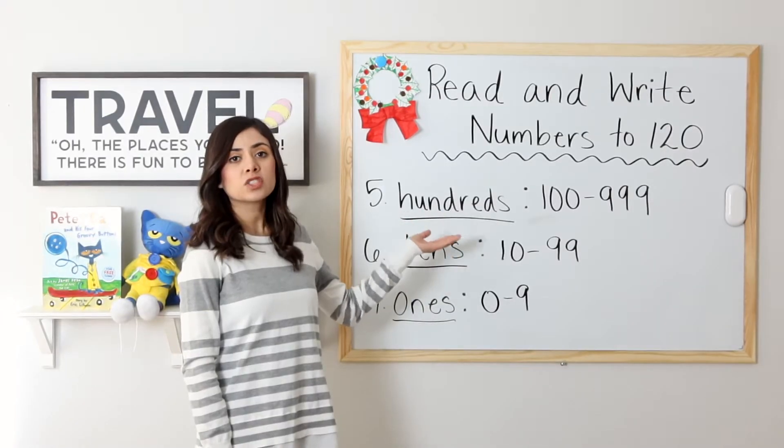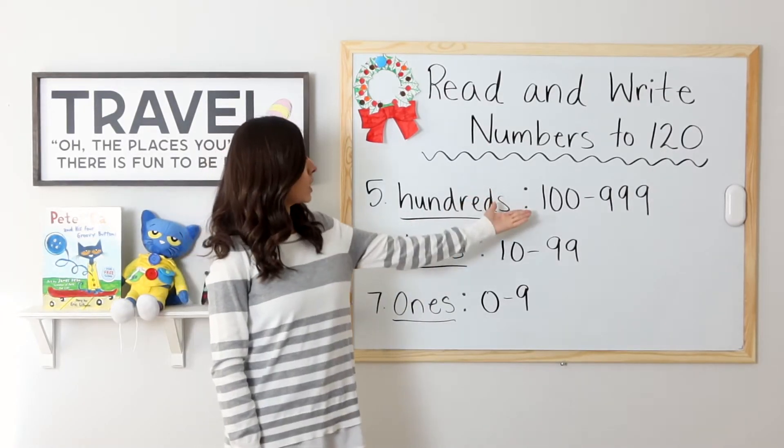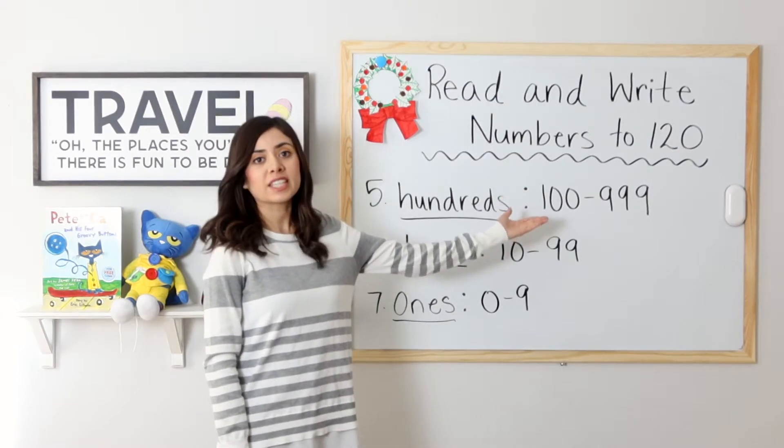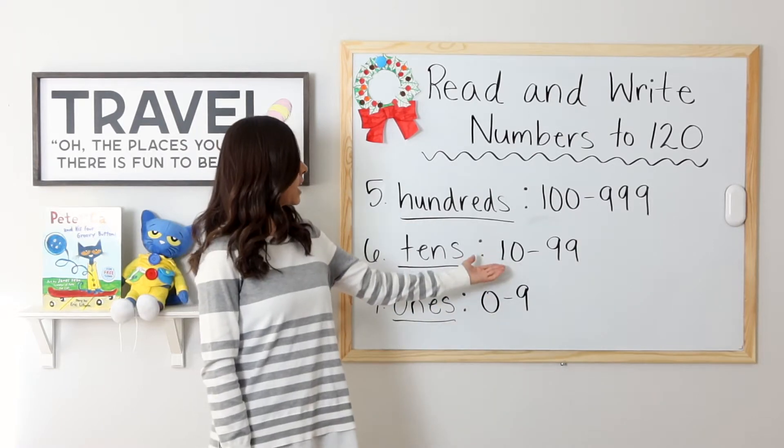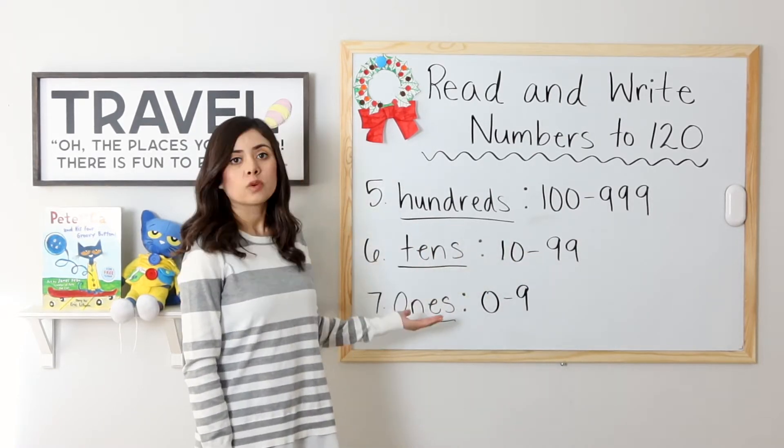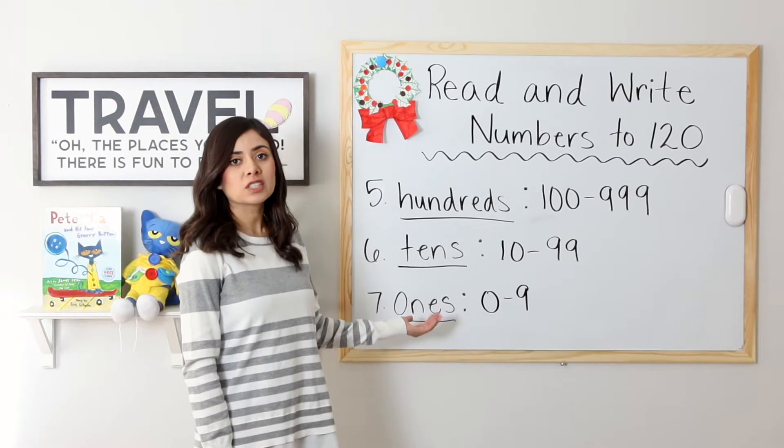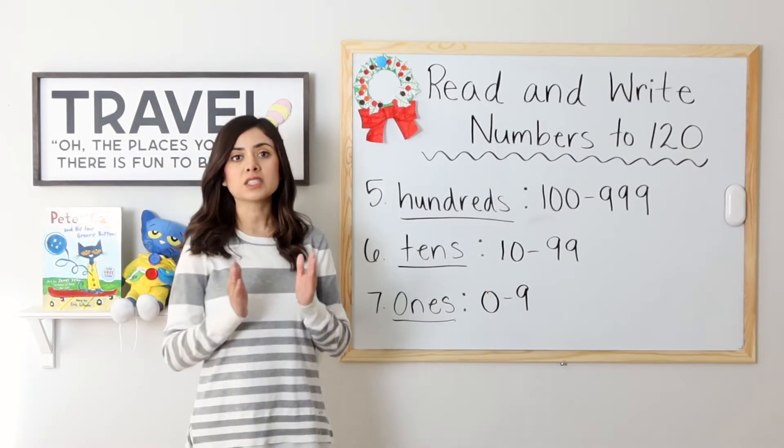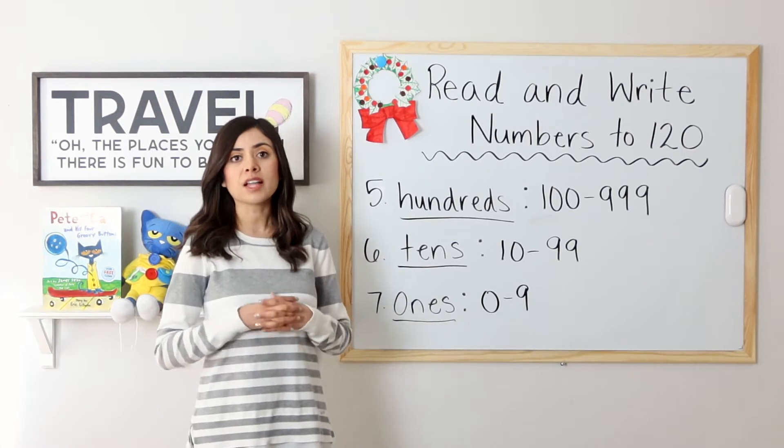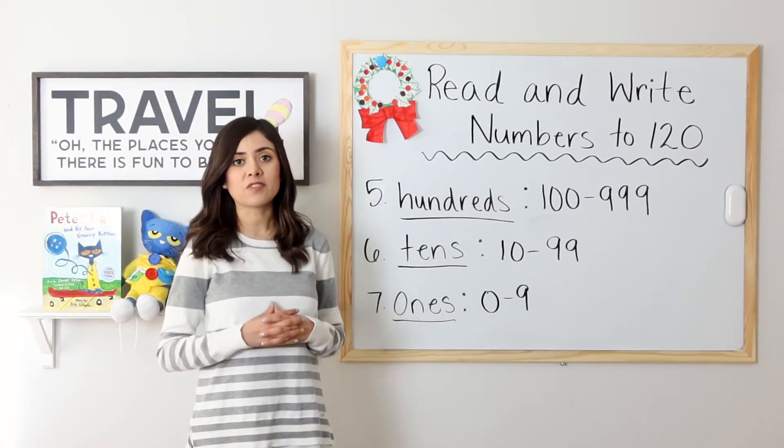Hundreds. Hundreds refers to the numbers between 100 and 999. Tens. Tens refers to the numbers between 10 and 99. Ones. Ones refers to the numbers between 0 and 9. Our ones, our tens, and our hundreds all have a specific place value.